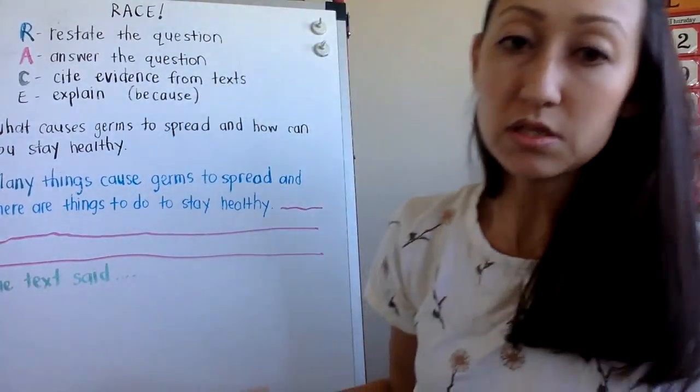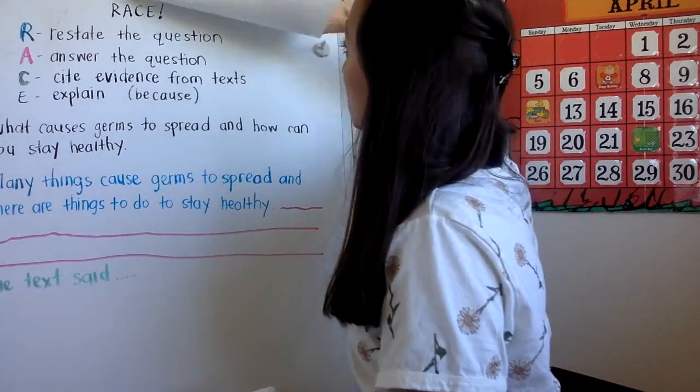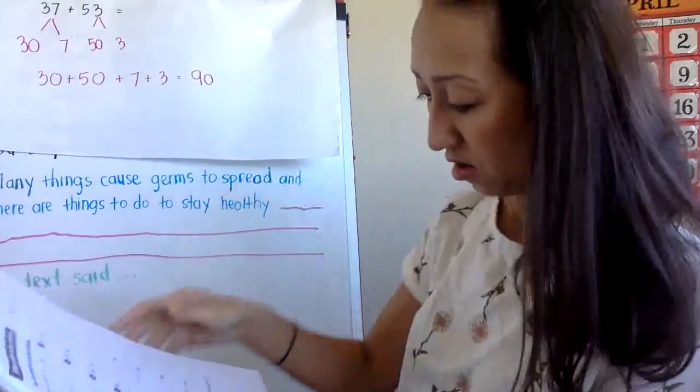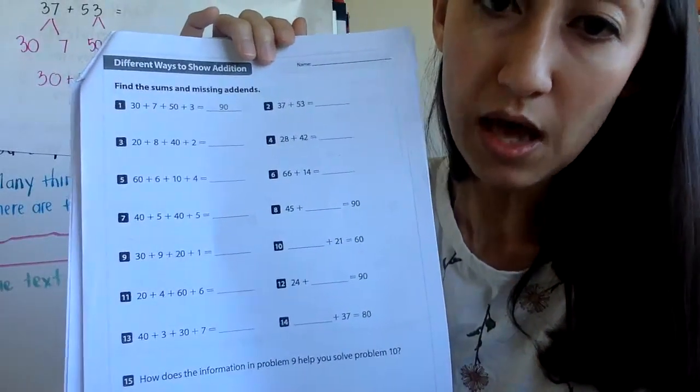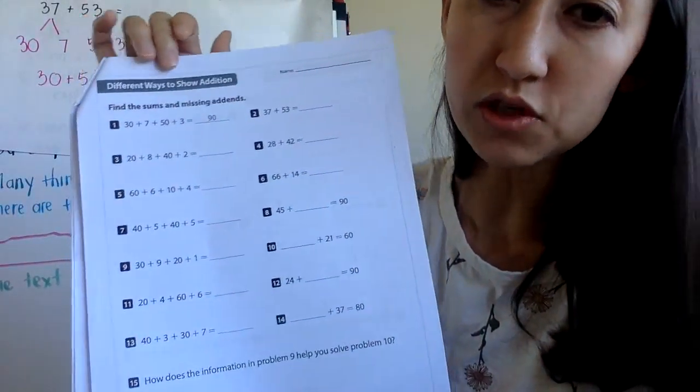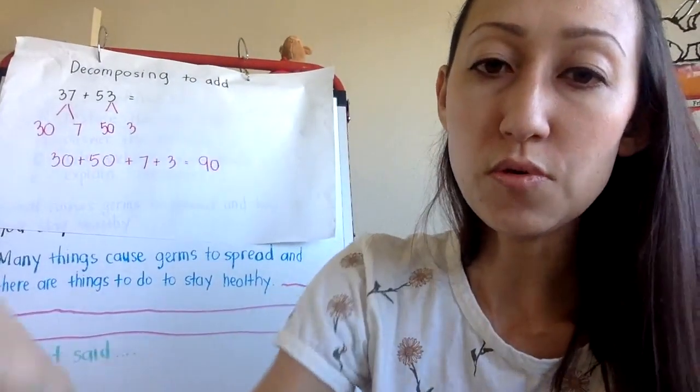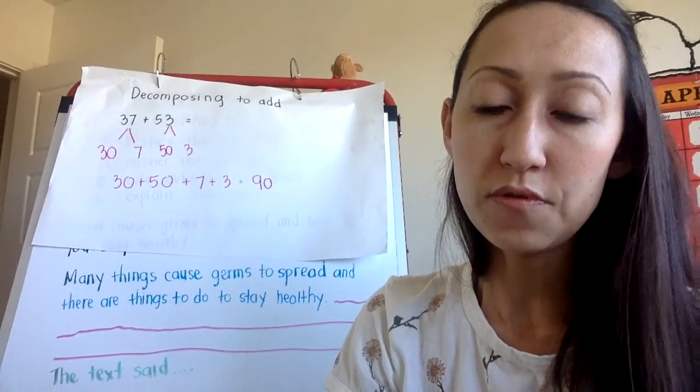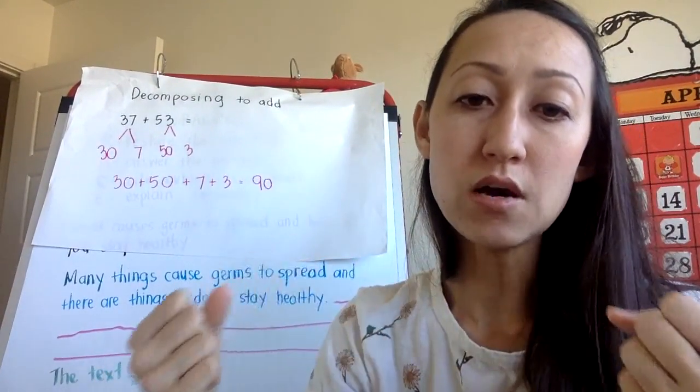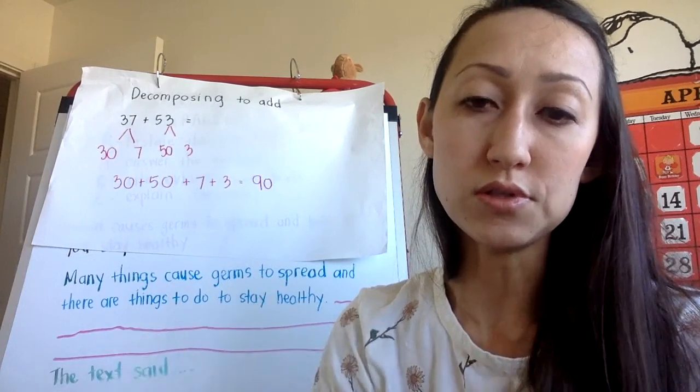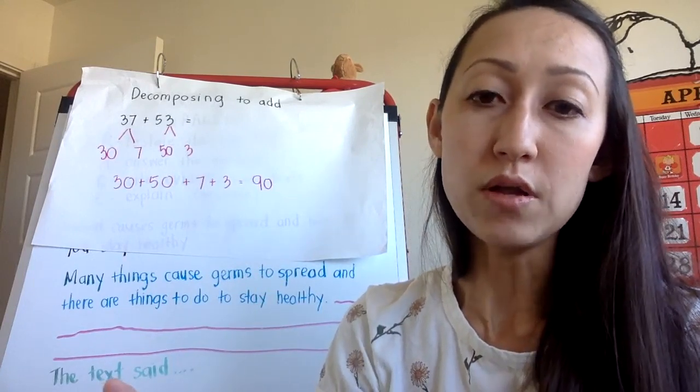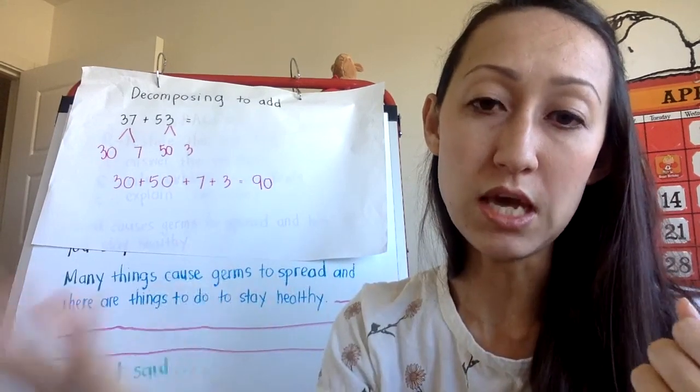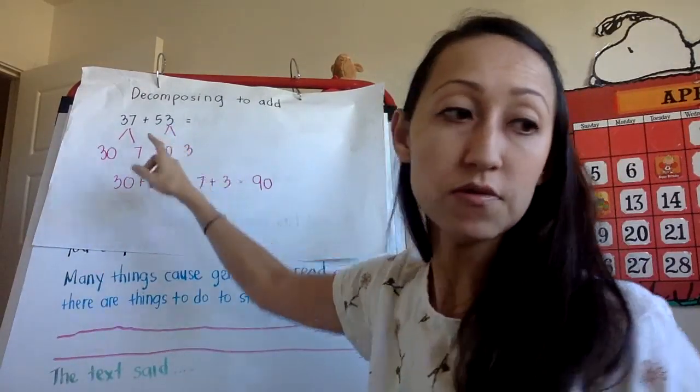Your math assignment today is on page 11. You're going to be adding today and you're going to be using different strategies like the decompose strategy. We know that one because we've done this a lot in class. So if you remember, decompose means to break down larger numbers into smaller parts. One way to break down a two-digit number that makes a lot of sense is to break it into tens and ones. So that's what I did for you.